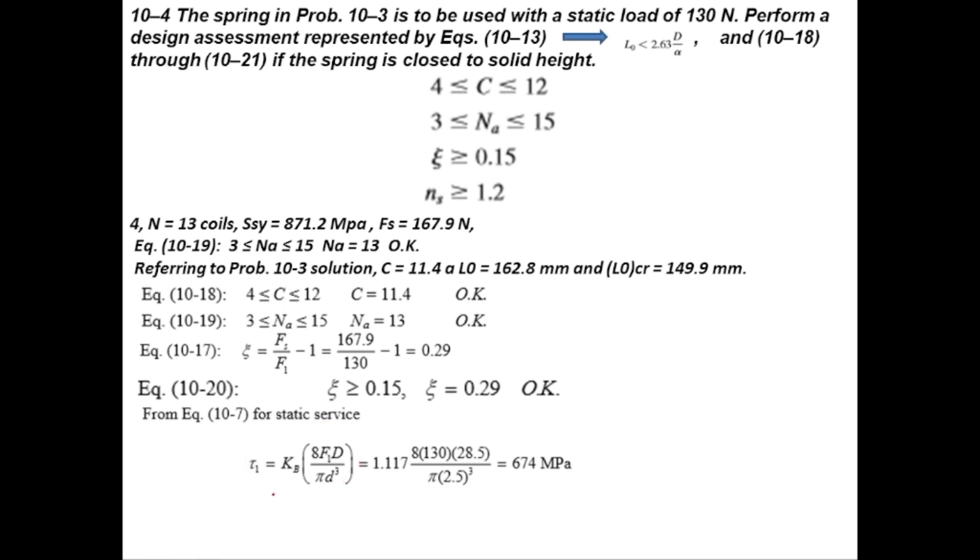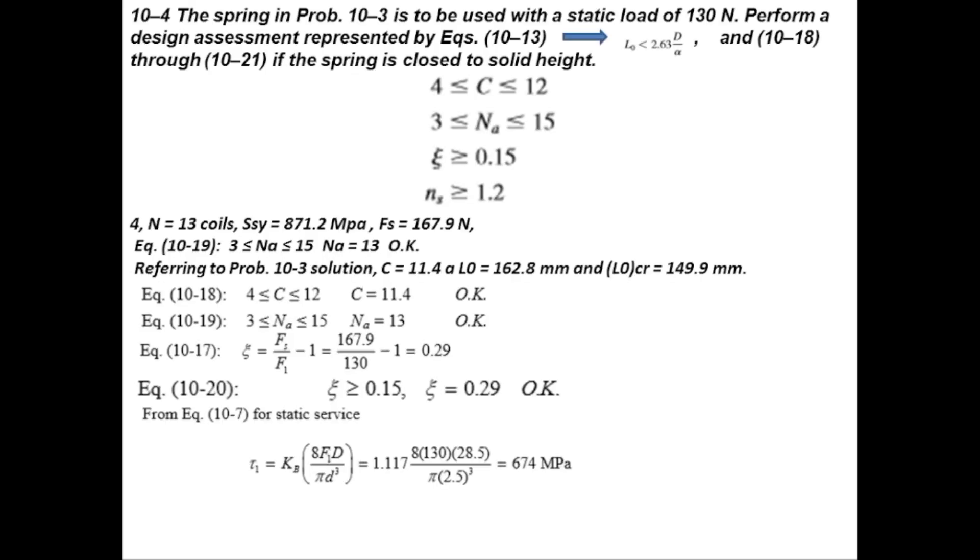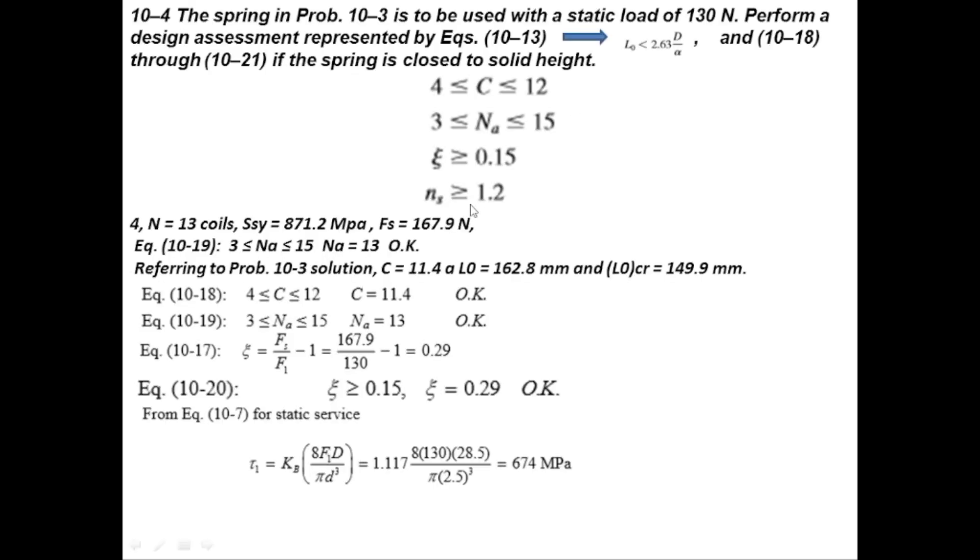Now let's find out the factor of safety. It is given to be torsional yield strength divided by the shear stress produced in the spring. Torsional yield strength is 871.2 MPa and shear stress is 674 MPa, so factor of safety equals 1.29. As Ns should be greater than 1.2, the design is okay up till now.